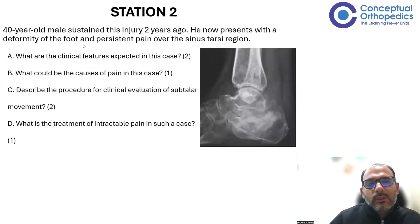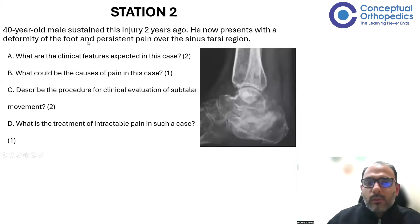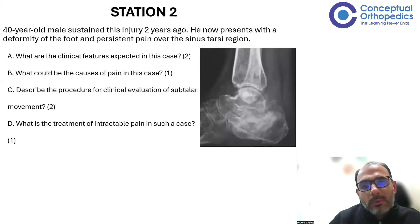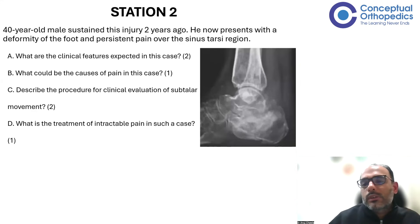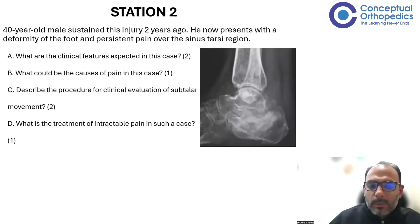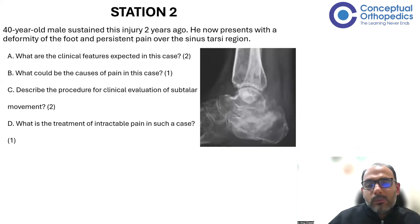So next question. An X-ray is shown. A 40-year-old male sustained this injury two years ago. He now presents with deformity and persistent pain over the sinus tarsi region. What are the clinical features expected in this case? What could be the causes of pain? Describe the procedure for clinical evaluation of subtalar movement. And what is the treatment of intractable pain in such a case?